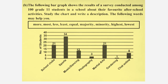Now let's see the next question. The following bar graph shows the result of a survey conducted among 100 grade 11 students in a school about their favorite after-school activities. Study the chart and write a description. The following words may help you: more, most, less, least, equal, majority, highest, lowest.